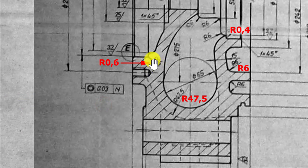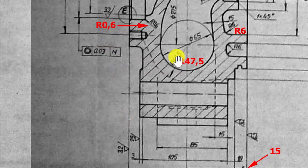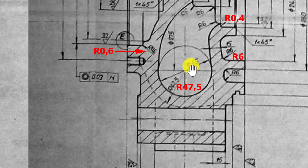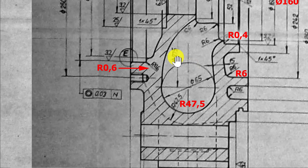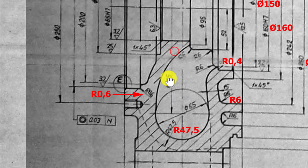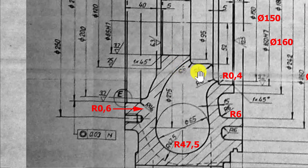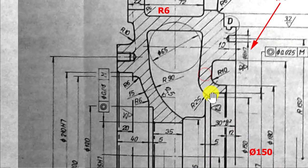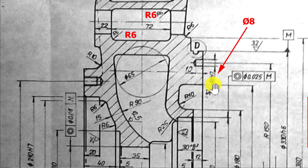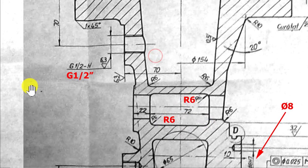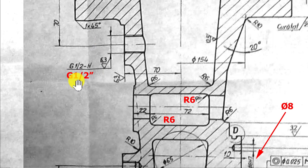This is a small radius of 0.6, radius 47.5, diameter 65 — visible. Diameter of 275 — also visible. Radius 6, radius 6, radius 0.4. Diameter of 8 — not very visible. Radius 6, radius 6. GAS 1 half inch — you know about this, there are dimensions for pipes.